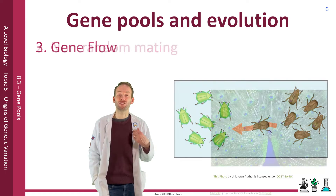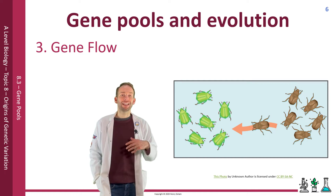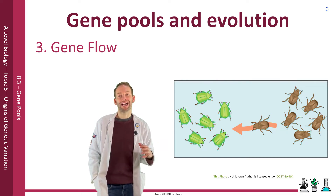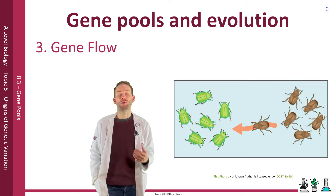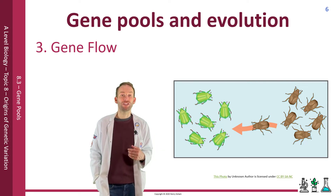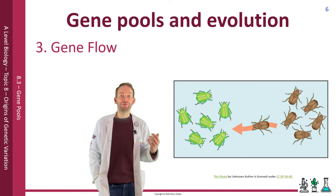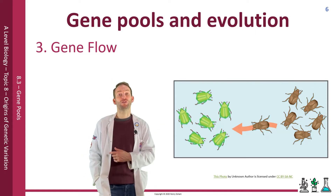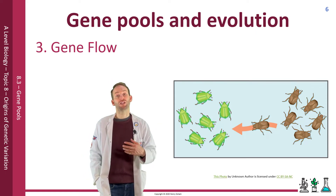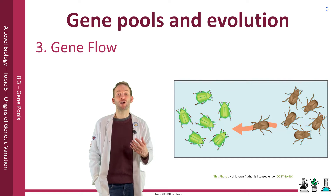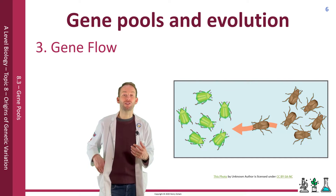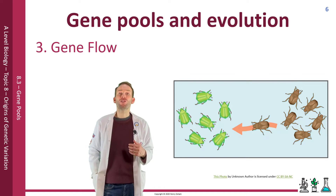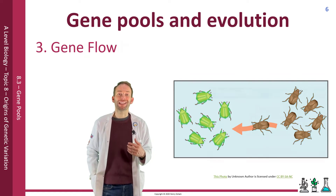The third factor is gene flow. Allele frequency can be affected by alleles entering or leaving a population via migration. Immigration could introduce new alleles to a population, while emigration could cause some alleles to be lost from the population. Gene flow can also arise due to dispersal of seeds, pollen, or spores.